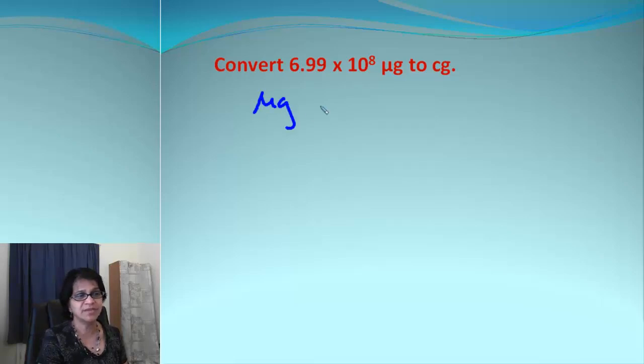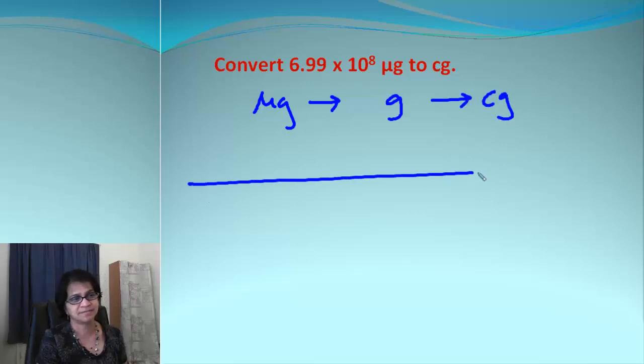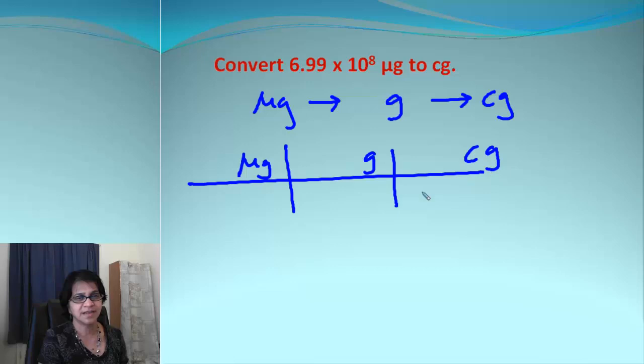This is going from microgram to centigram. So remember again, we need to go through our hub, the basic unit, microgram to gram to centigram. Same old step, getting the grid ready. The next step is cancelling the units. So we need to do criss cross, same units. Your given is going to go right here.